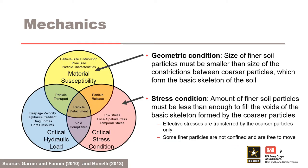Garner and Fannin developed a Venn diagram shown on this slide to illustrate that particle detachment occurs with the unfavorable coincidence of a critical geometric condition, stress condition, and hydraulic load. The critical geometric condition requires the size of finer soil particles to be smaller than the size of the constrictions between coarser particles. The critical stress condition requires the effect of stresses to be transferred by coarser particles only, leaving some particles free to move.